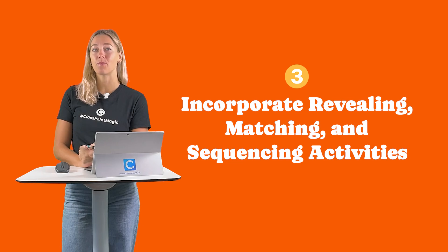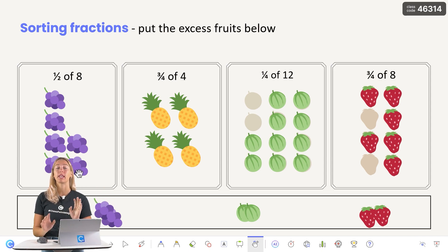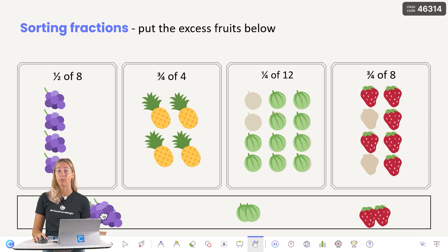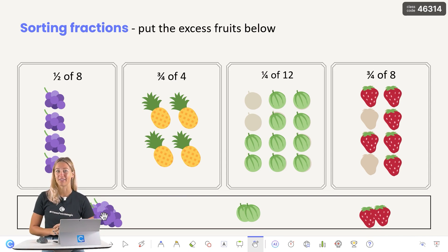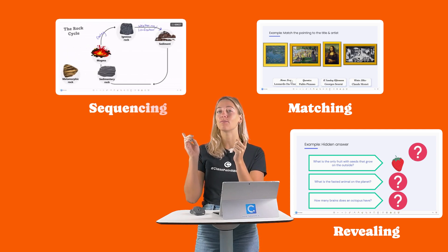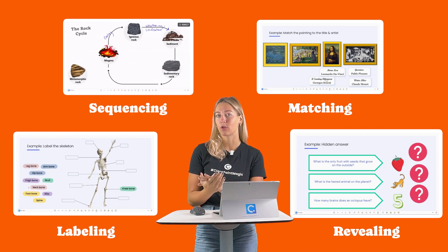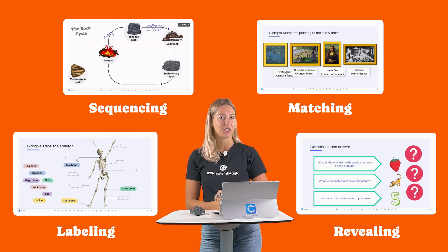Number 3: Incorporate revealing, matching, and sequencing activities. Employ draggable objects as visual aids to help facilitate your teaching. With the freedom to move any shape, text, or image around on your slide while presenting, you can use this for all sorts of fun activities like revealing, matching, sequencing, and even labeling. Learn more about setting up draggable objects to employ this strategy.